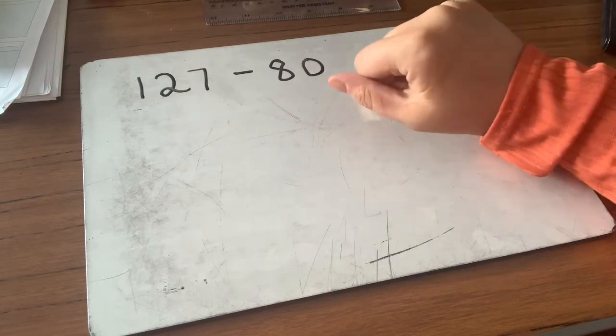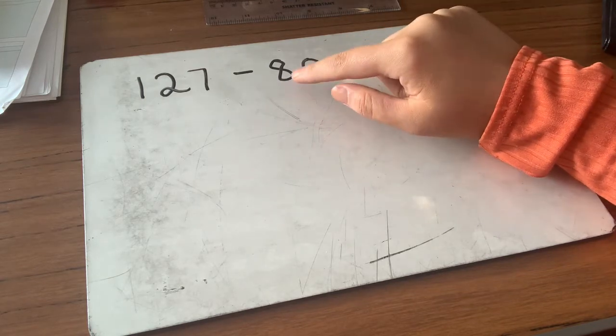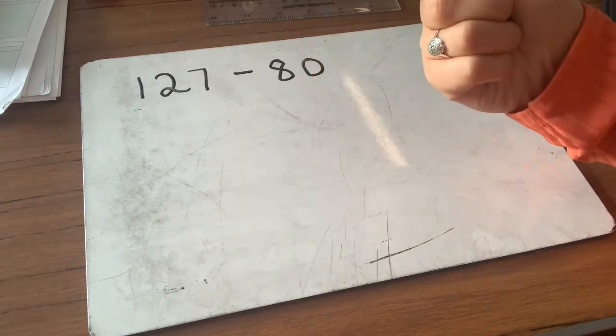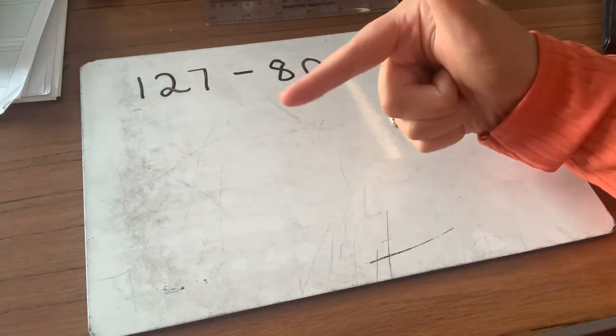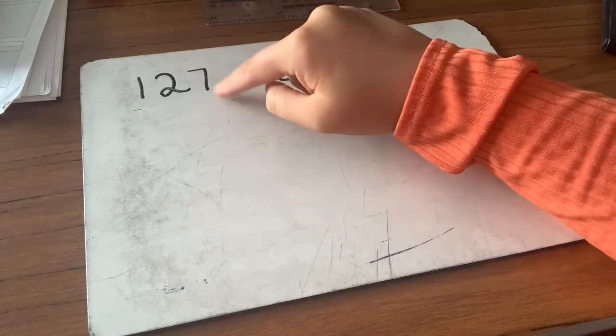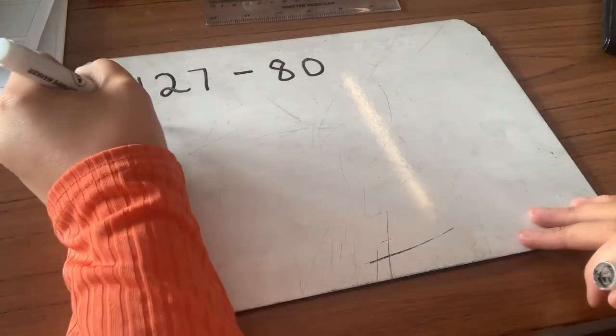There's a couple of ways of doing this. We could count on 10s on our fingers, so we know that there's two 10s to get to 100, so 90, 100. And then we need to add on two more to get to 120, so 110, 120. So there would be four 10s, and then I've got my seven units, so that would be 47.